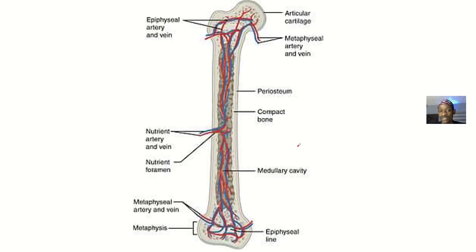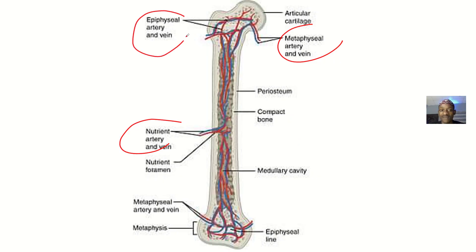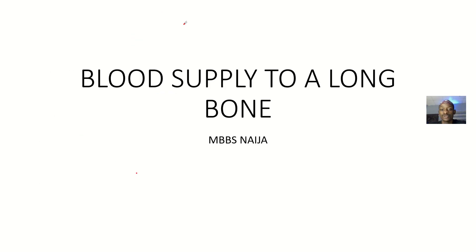Just a revision: we said metaphyseal artery must be there, nutrient artery must be there, then periosteal arteries — they may not be labeled but you know they are there. In some long bones, there is also the epiphyseal artery. They told you to talk about blood supply, which strictly means the arteries — so watch out and don't talk about veins. That is the blood supply to a long bone.